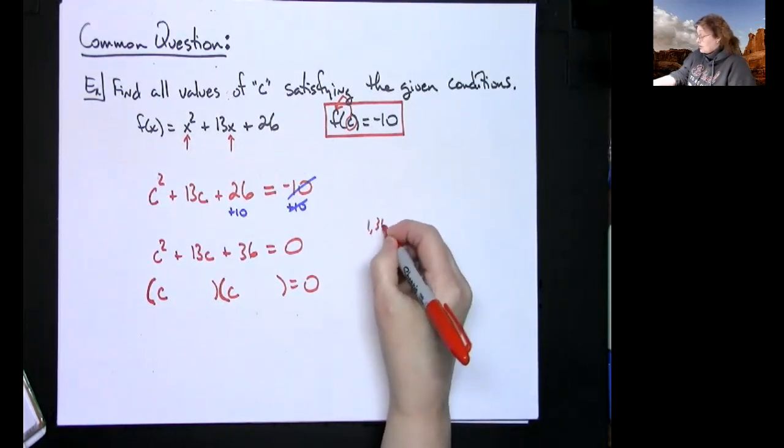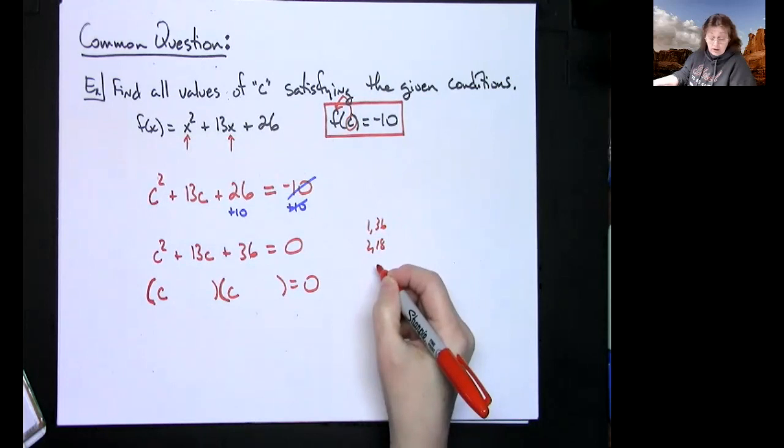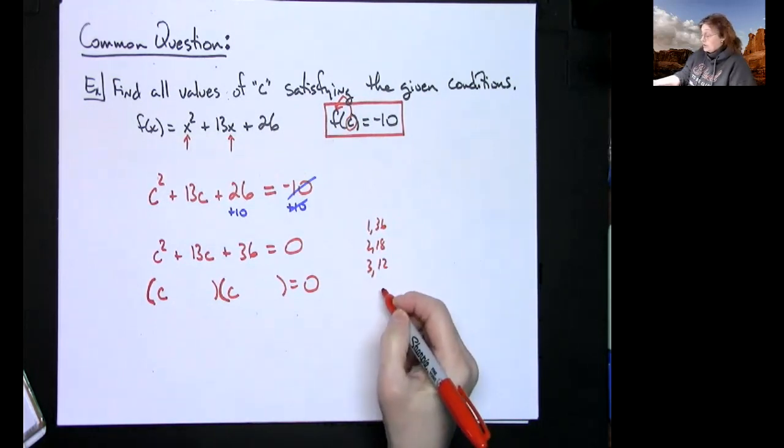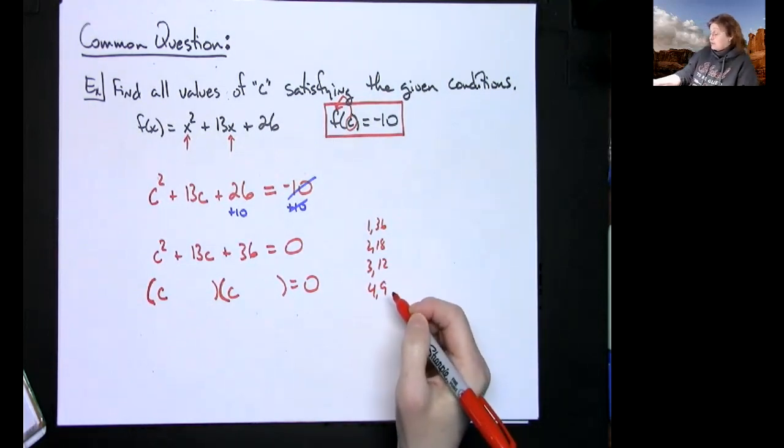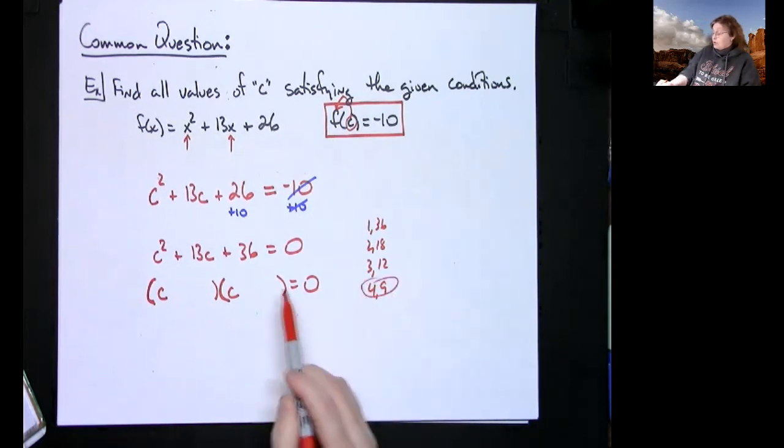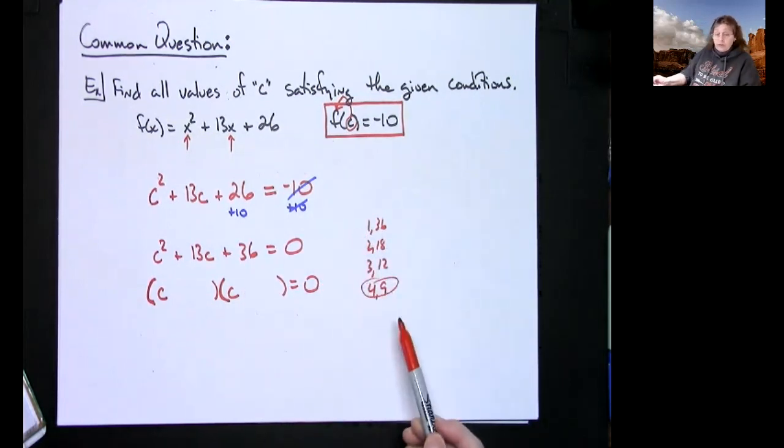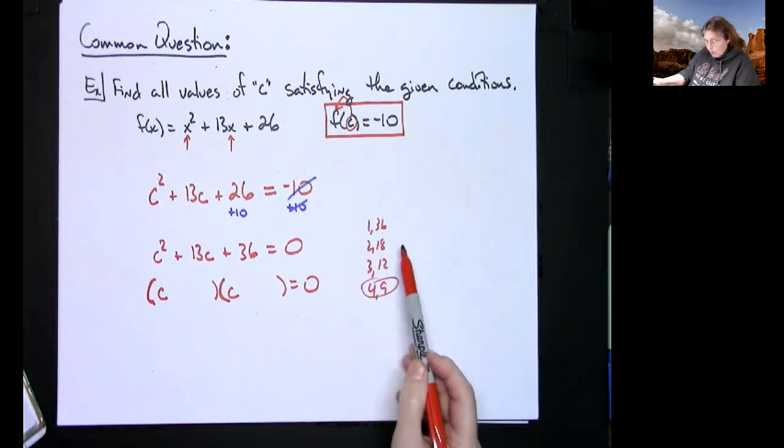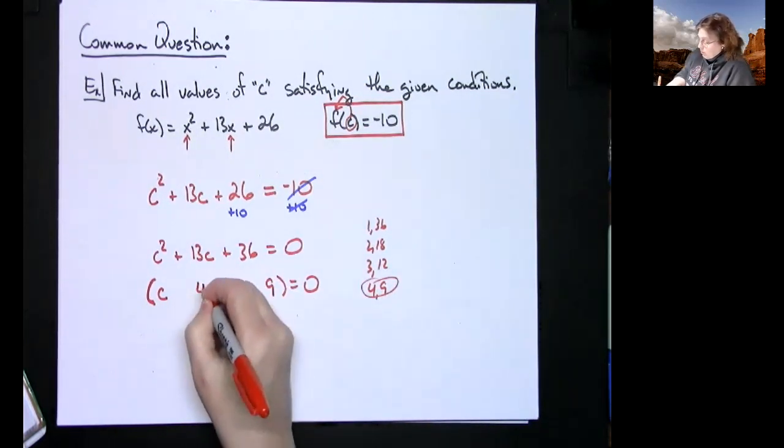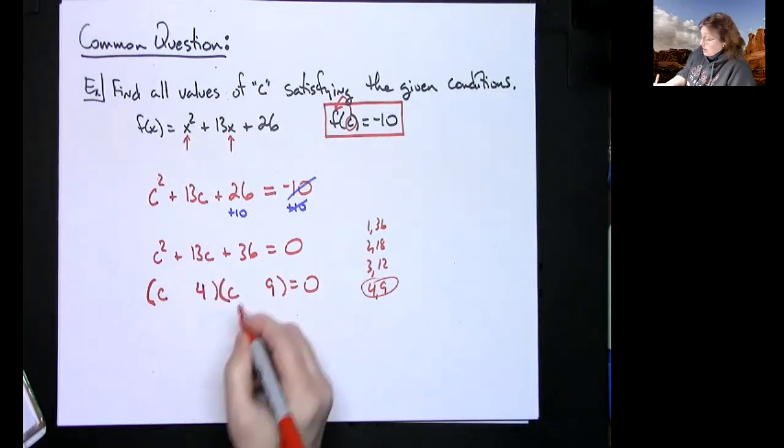Two numbers that multiply together to be 36 but add to 13. If you need to go through and make some charts: 1 times 36, that's not going to work; 2 times 18, not going to work; 3 times 12, not going to work; 4 times 9 is 36 and 4 plus 9 is 13.